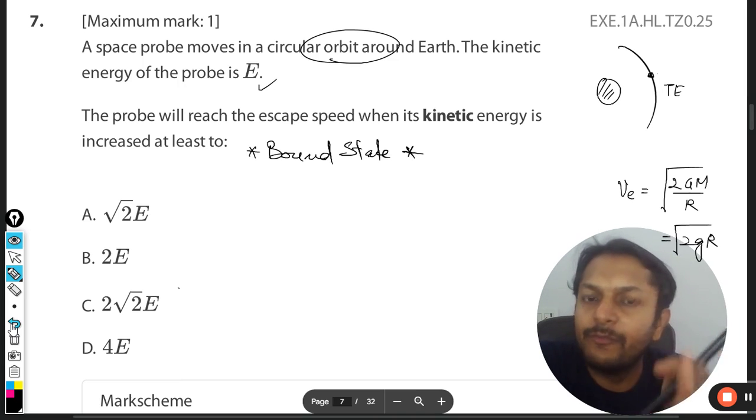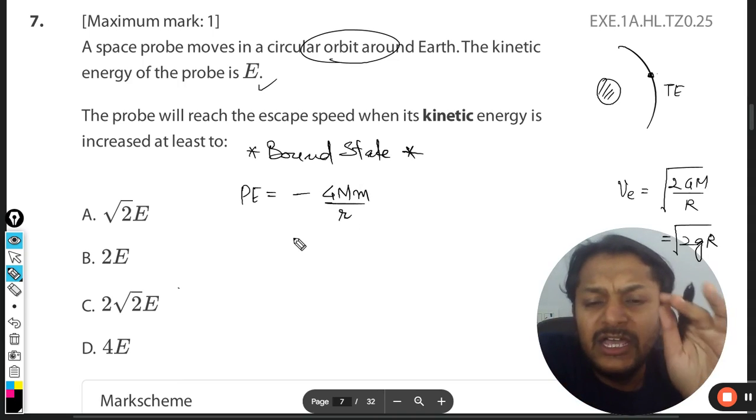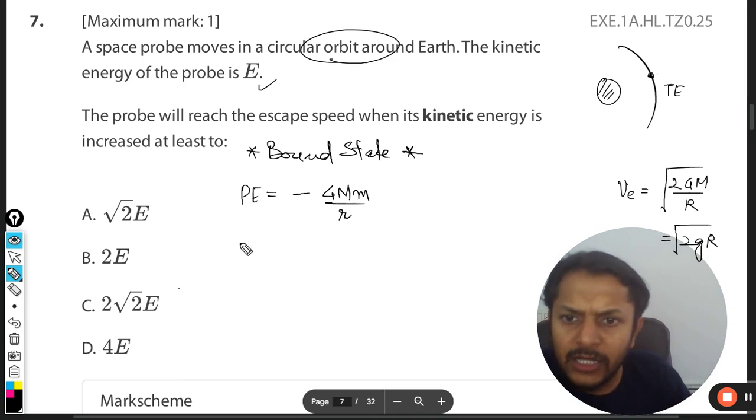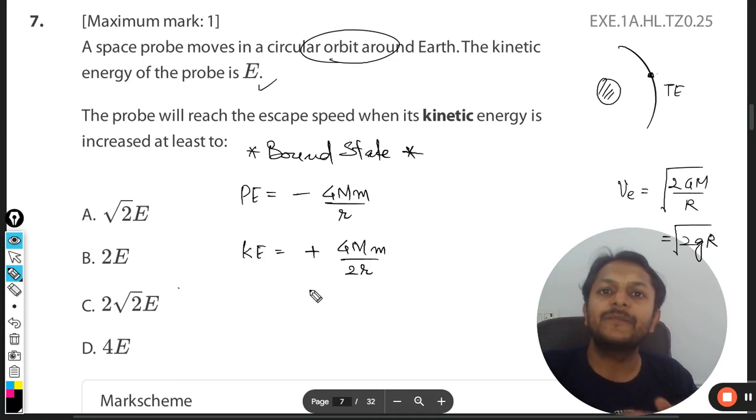satisfying the condition of bound state. Now how is that happening? So what is bound state? In bound state we know that the potential energy will be taken as this. Now potential energy in gravitation is always taken negative. It is given by GMm by R.